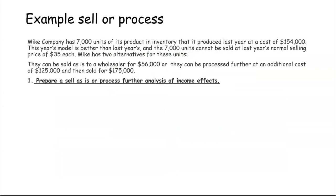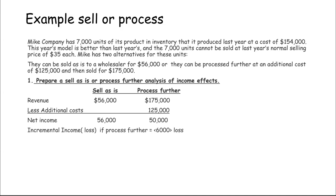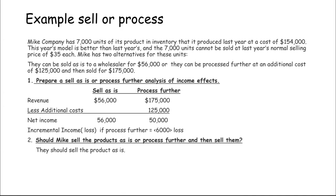Here's our sell or process example. The company has 7,000 units produced last year at a cost of $154,000 — we don't care about that, it's a sunk cost. This year's model is better, so those 7,000 units can't be sold at last year's price of $35 each. Two alternatives: sell as is to a wholesaler for $56,000, or process further at an additional cost of $125,000 and sell for $175,000. Looking only at incremental costs, the revenue to sell is $56,000 versus $175,000 less $125,000 additional processing costs. Based on this, we should not process further because it would cost us $6,000 more — they should just sell as is.